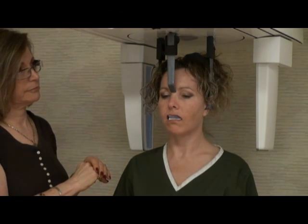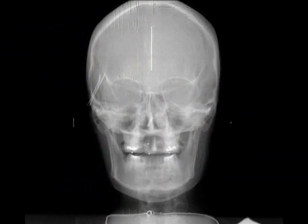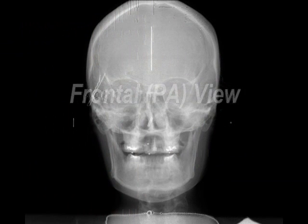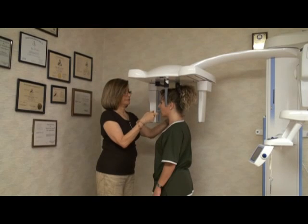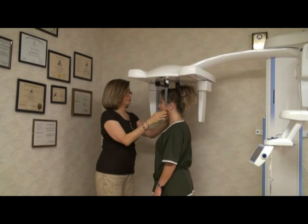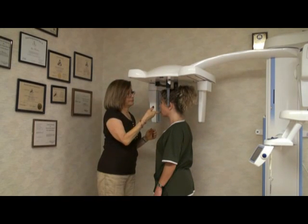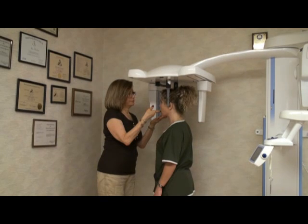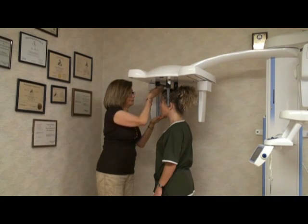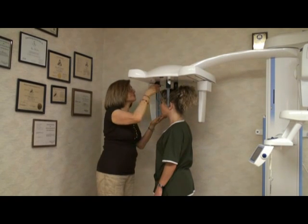We recommend the cassette distance be standardized as close to the patient as possible for all views. Keep the Wehmer First Fit Maxillary Matrix Tray in the patient's mouth, along with the cotton rolls, to prop the jaw slightly open. Have the patient bite gently to maintain position of the tray, but not hard enough to cause deformation or disengagement of the tray. It's important that the tray remains seated in the same position as was used for the lateral view.